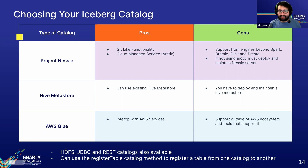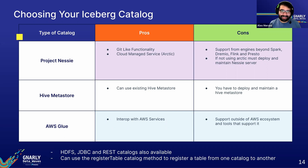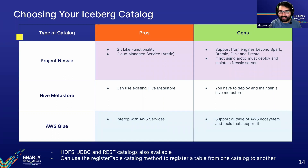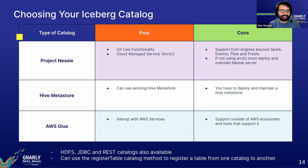You're not married to any catalog — you can start with whatever makes sense and switch later. If you start with Hive but later want Project Nessie, the register table method built into the catalog class lets you register an existing table's metadata file with a new catalog without rewriting data. You just create an instance of your new Project Nessie catalog and register the metadata file — and that table is now part of the new catalog.